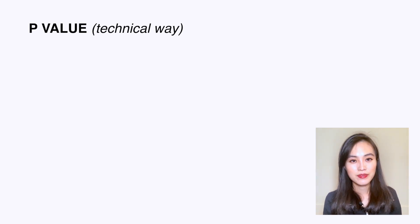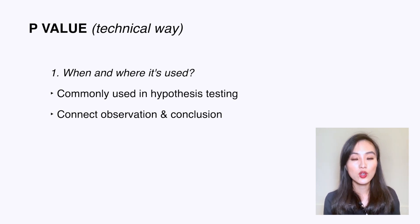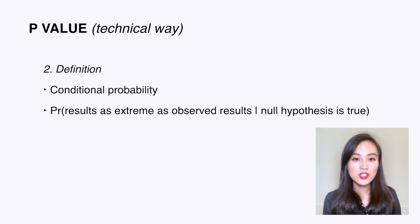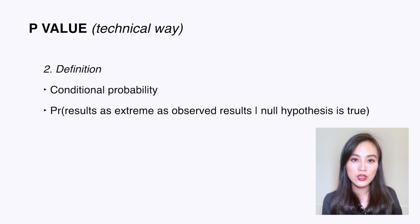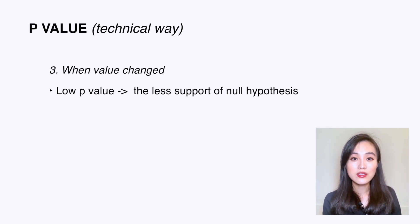The next terminology is p-value. Let's explain it to a technical audience first. P-value is commonly used in hypothesis testing to connect the dots between observation and conclusion. It is a conditional probability that measures the probability of getting test results at least as extreme as the observed results, given that the null hypothesis is true. A low p-value indicates less support for the null hypothesis.